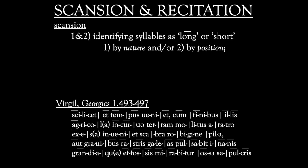Now, how does scansion work? There are four elements or steps to scansion. The first and second steps go together: a syllable can be scanned or identified as long for one or both of two reasons. The first reason is called by nature, the second reason by position.